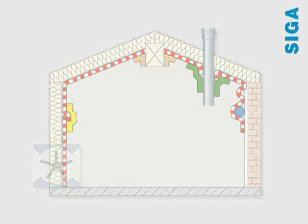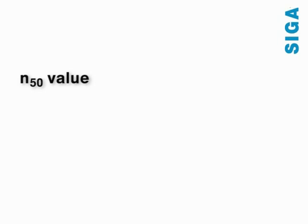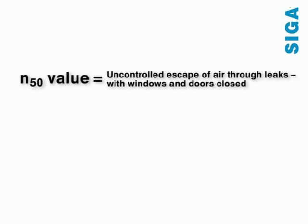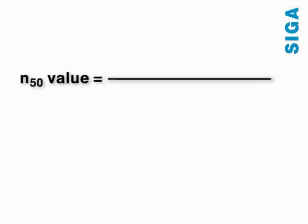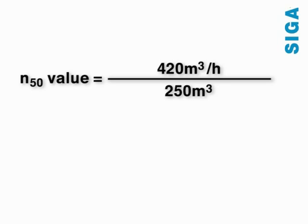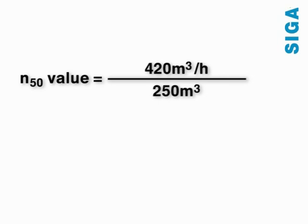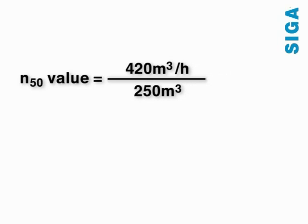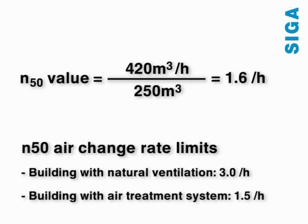This test determines the N50 value — that is, the structure's air change rate. This value is calculated by dividing the fan's hourly delivery rate by the heated indoor air volume. The structure being tested here has an indoor air volume of 250 cubic meters. At a positive pressure of 50 pascal, 420 cubic meters of heated air escape every hour. Therefore, the air change rate is 1.6 per hour, which is the limit value to comply with.